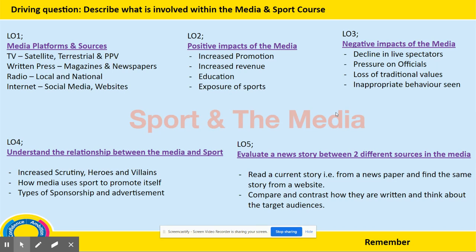The Sport in the Media unit is split up into five different LOs. The first requires you to write about the different media platforms — such as TV, written press, radio, and internet — and what they do for sport, and the differences between each platform. LO 2 and 3, you'll look at the positives and negatives of media and sport. LO 4, which is the hardest of the five LOs in my opinion, you will look at the relationship between media and sport. And LO 5, you will compare two articles about the same event.